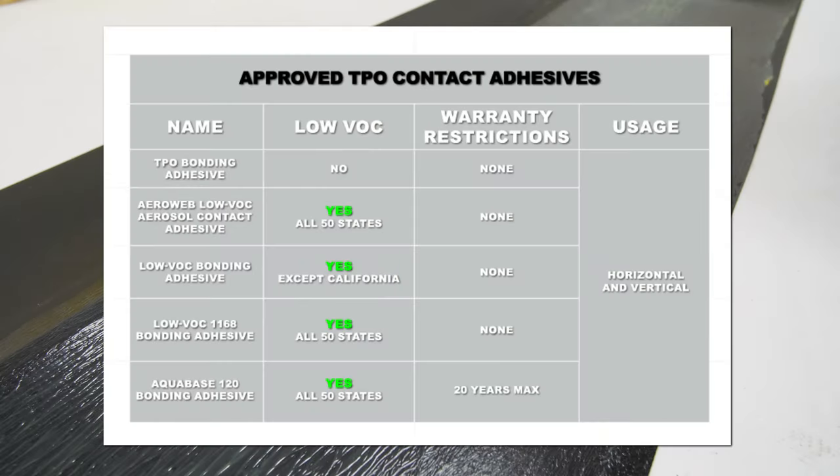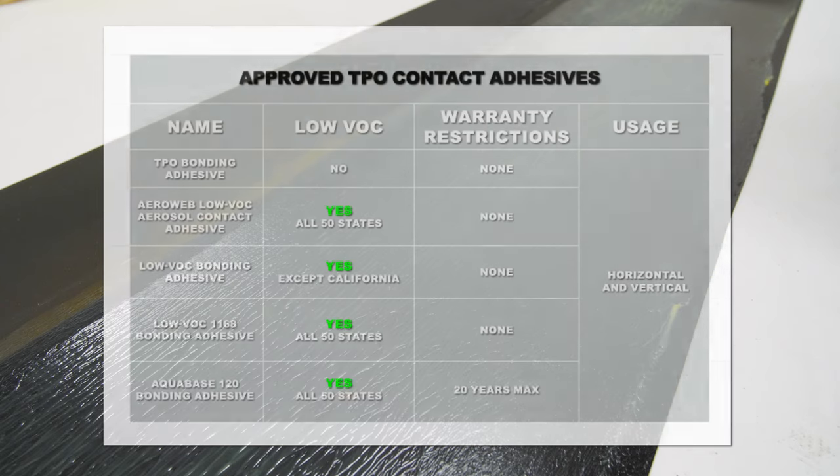The following adhesives are approved for use on vertical applications for standard TPO membranes: TPO bonding adhesive, AeroWeb low VOC aerosol contact adhesive, low VOC bonding adhesive, low VOC 1168 bonding adhesive, and AquaBase 120 bonding adhesive. We are using AquaBase 120 in this demonstration.